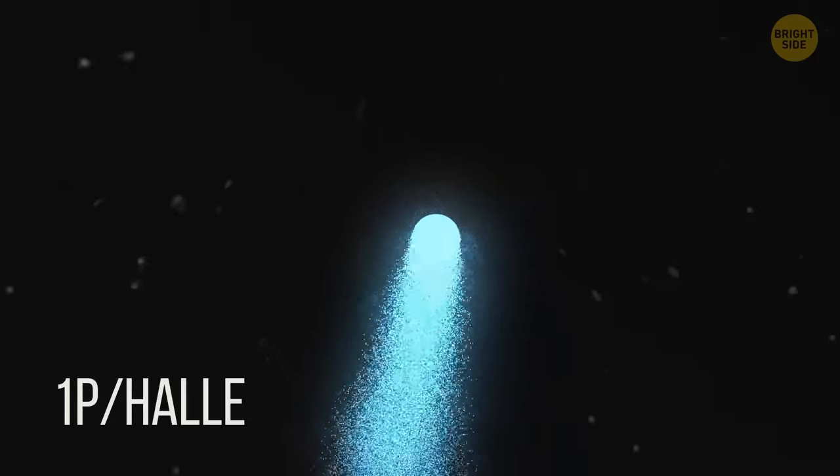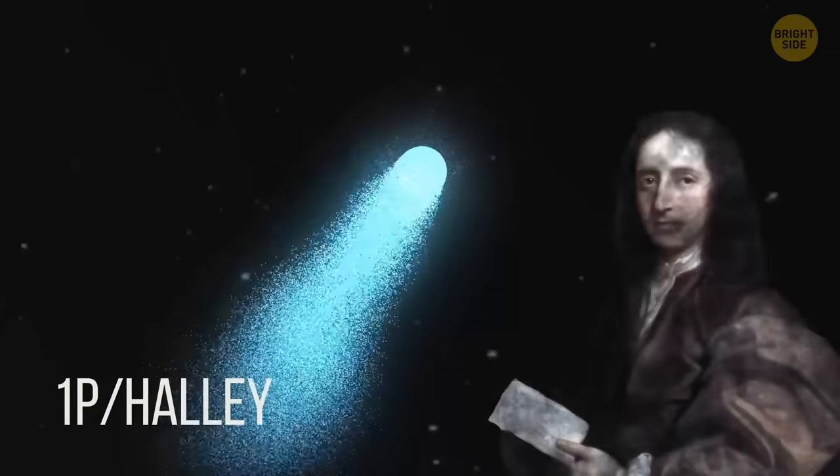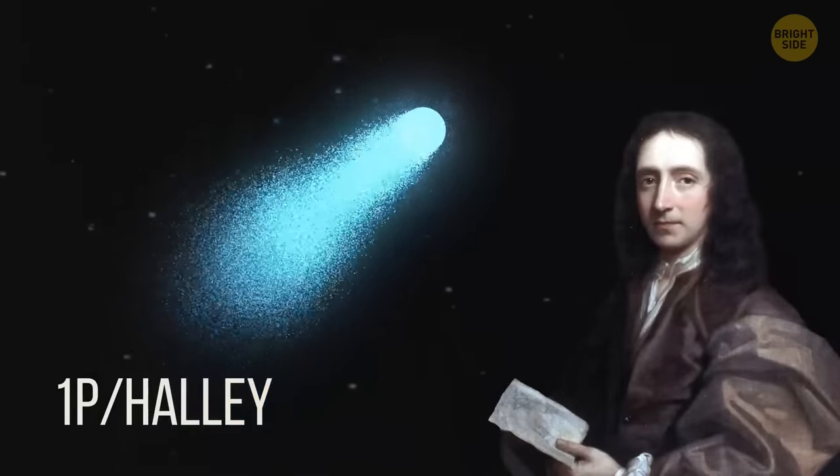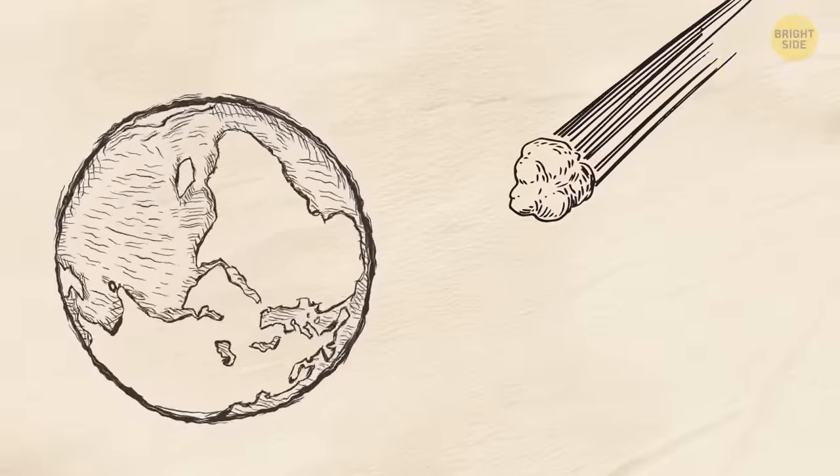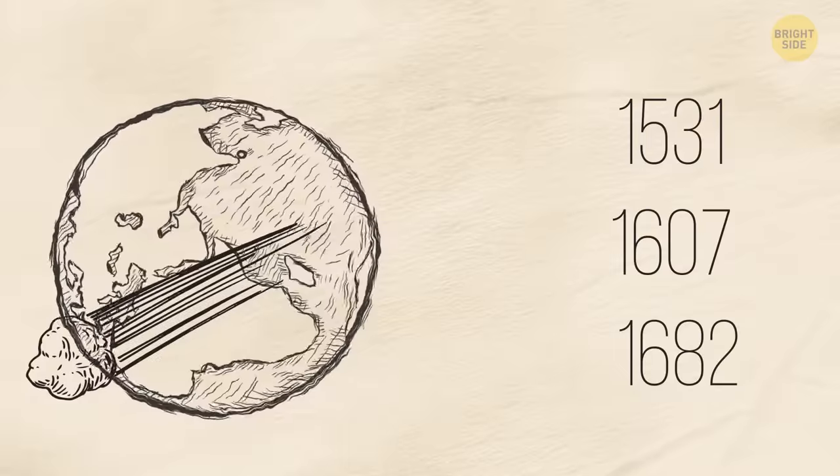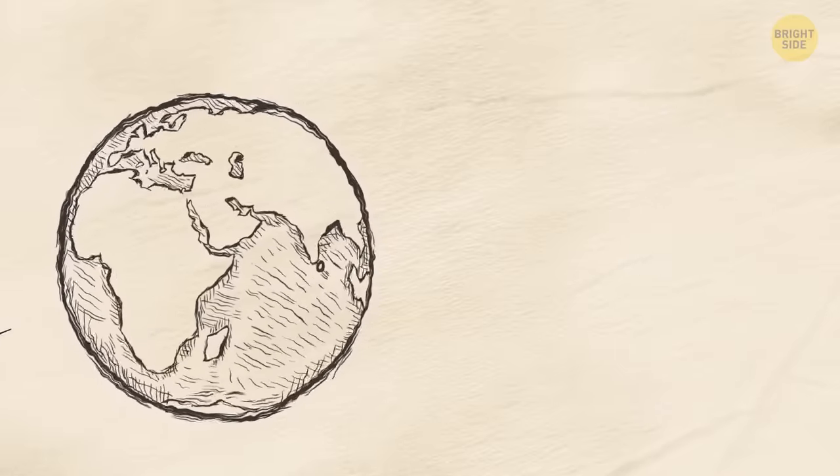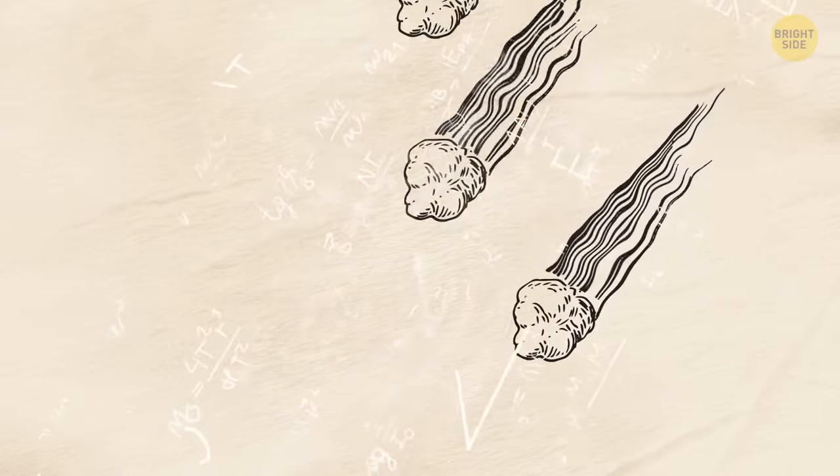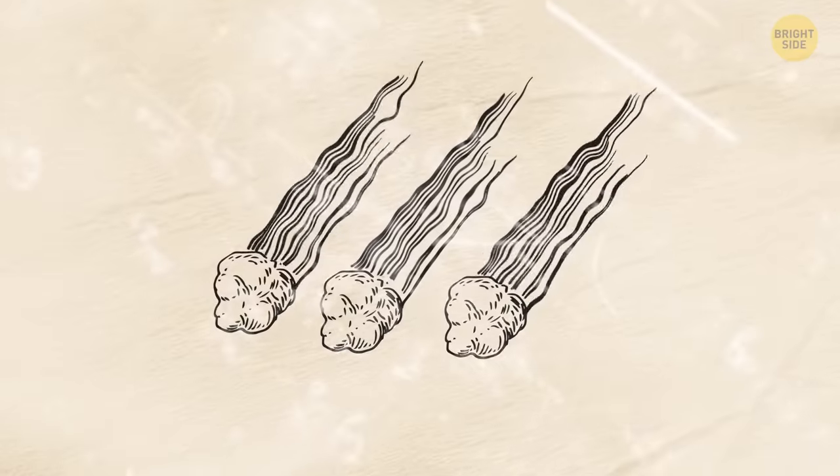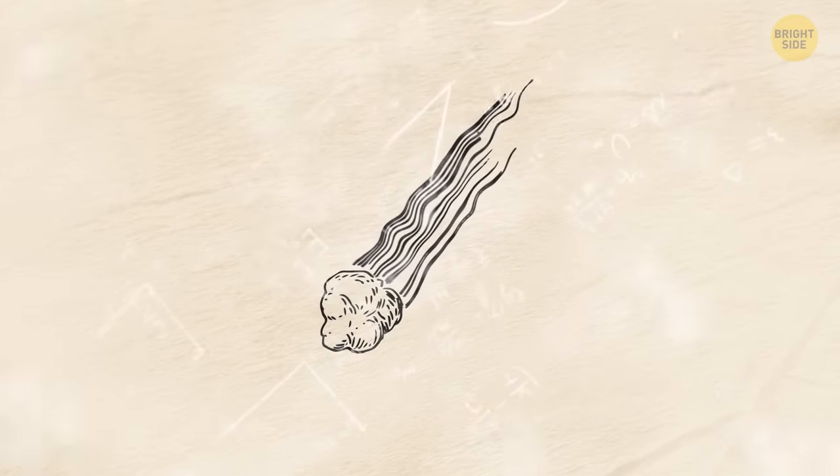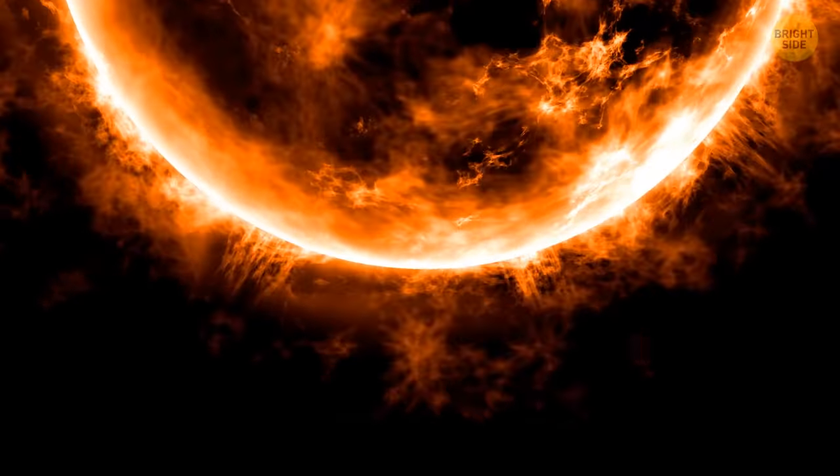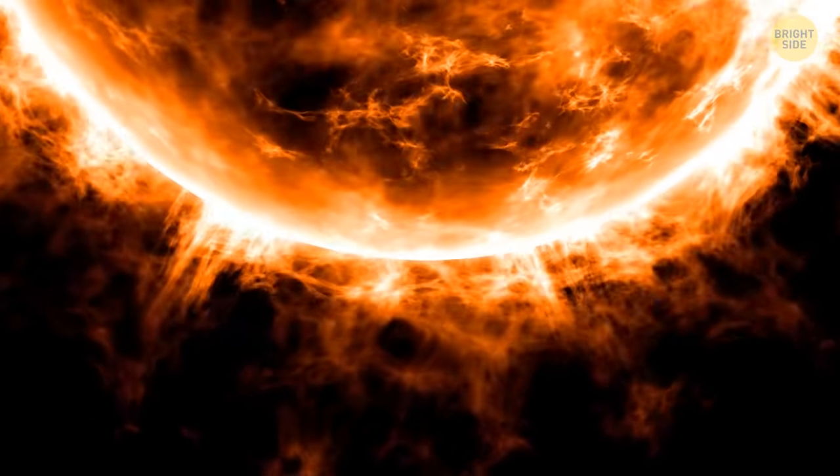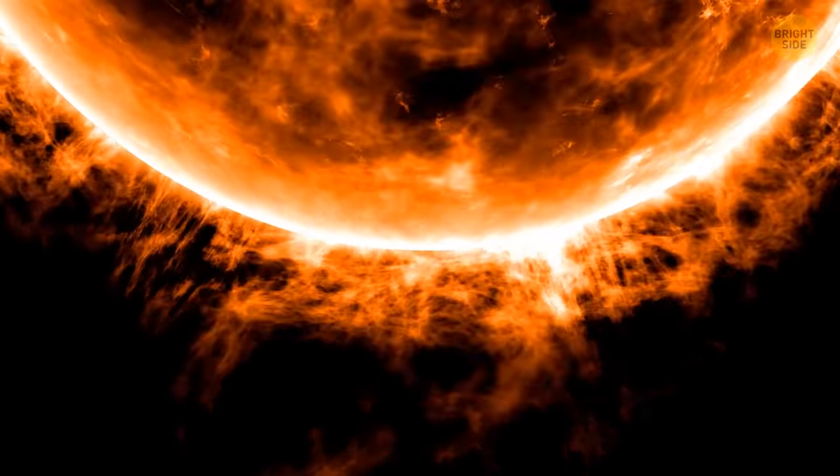Its official title is 1P slash Halley, and it's named after English astronomer Edmund Halley. He was the one who studied the reports of a comet nearing Earth in 1531, 1607, and 1682. Based on his calculations, he concluded that these three occurrences had been, in fact, the same comet, returning over and over again. He also predicted its return in 1758. Halley's discovery also pointed out that some comets, like this one, orbited the sun, but their journey was not circular.